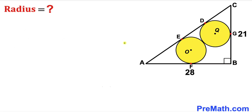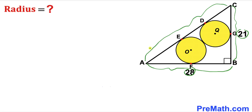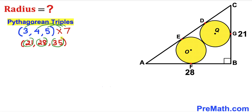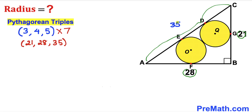Let's get started. Focusing on right triangle ABC, we know AB is 28 and BC is 21. We need to calculate AC. Recalling the Pythagorean triplet 3, 4, 5 and multiplying all values by 7 gives us 21, 28, and 35. So if BC is 21 and AB is 28, then side length AC must be 35.